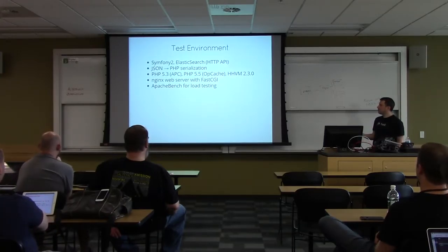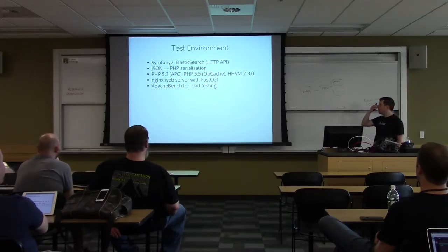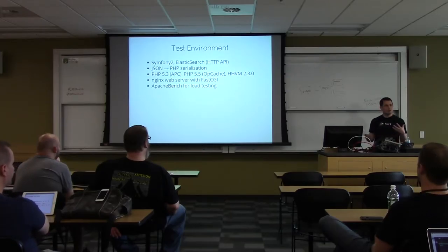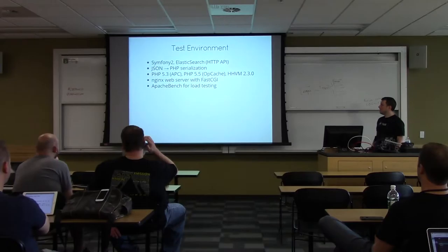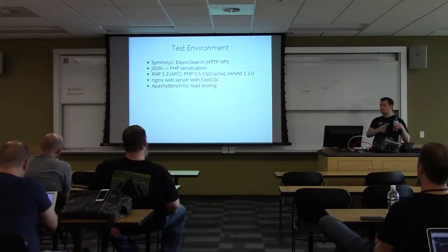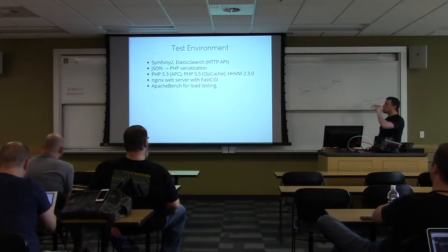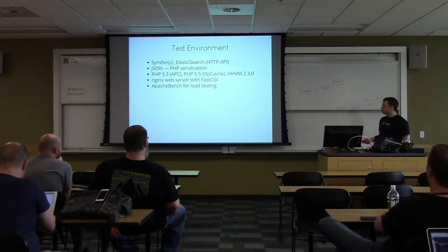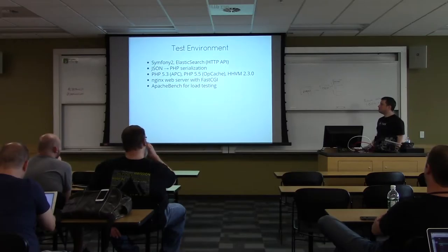They were very early, before Hack was available, benchmarking HHVM against PHP 5.5 and 5.3 with their Symfony app. Their app was very useful in that they were doing a lot of CPU-bound work, serializing large bits of JSON to PHP objects. It wasn't a typical app where you're querying the database and shuffling strings around, so this was definitely a use case where actual CPU optimization could actually help. They benchmarked using NGINX with FastCGI and used Apache Bench to simulate the load.